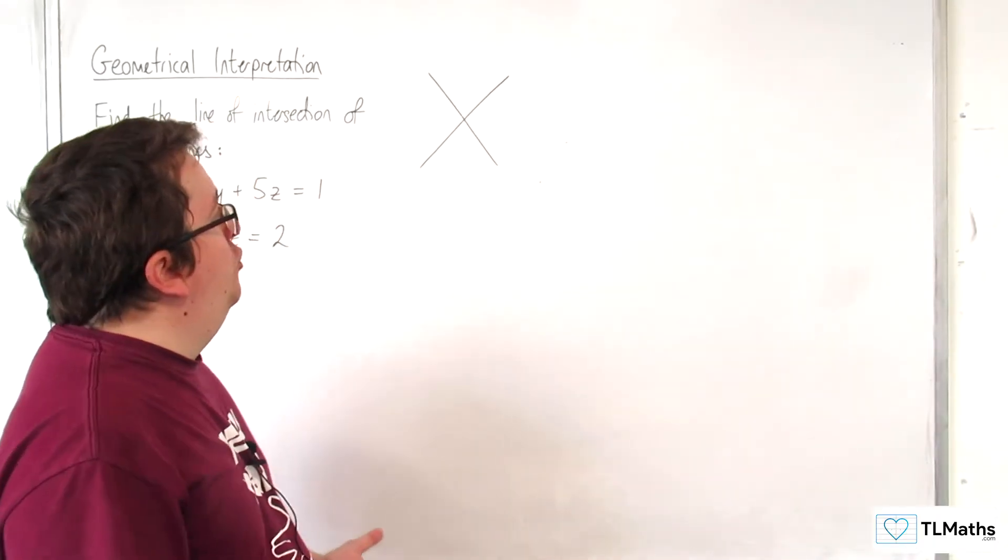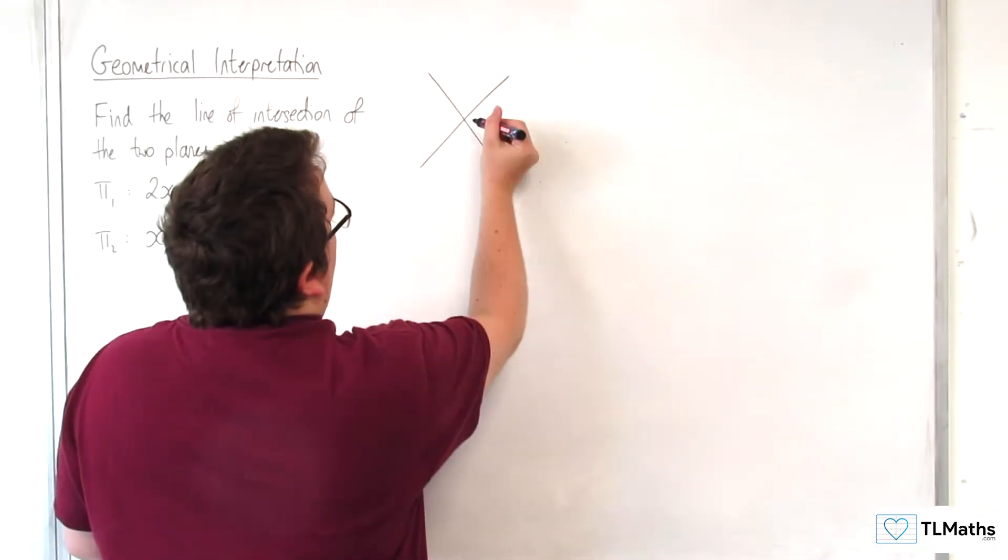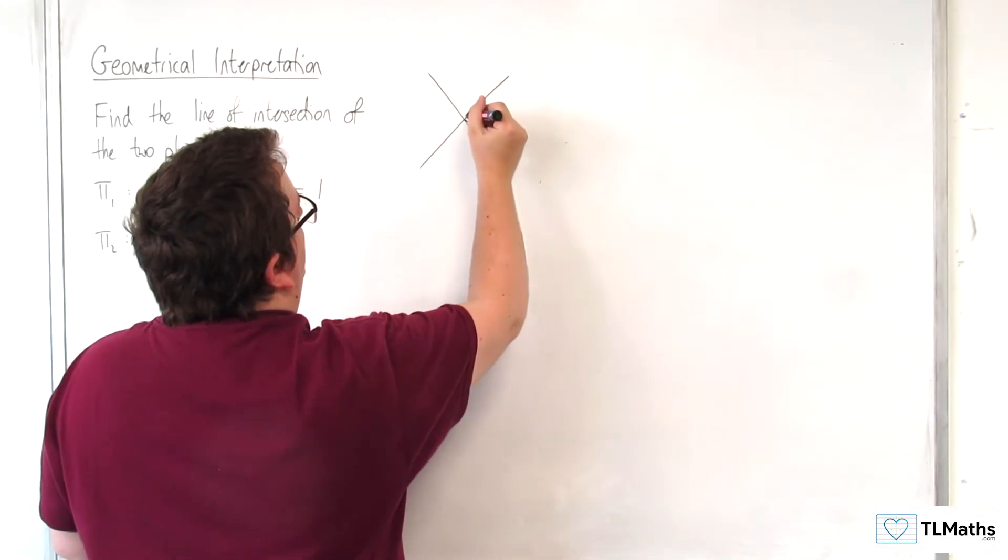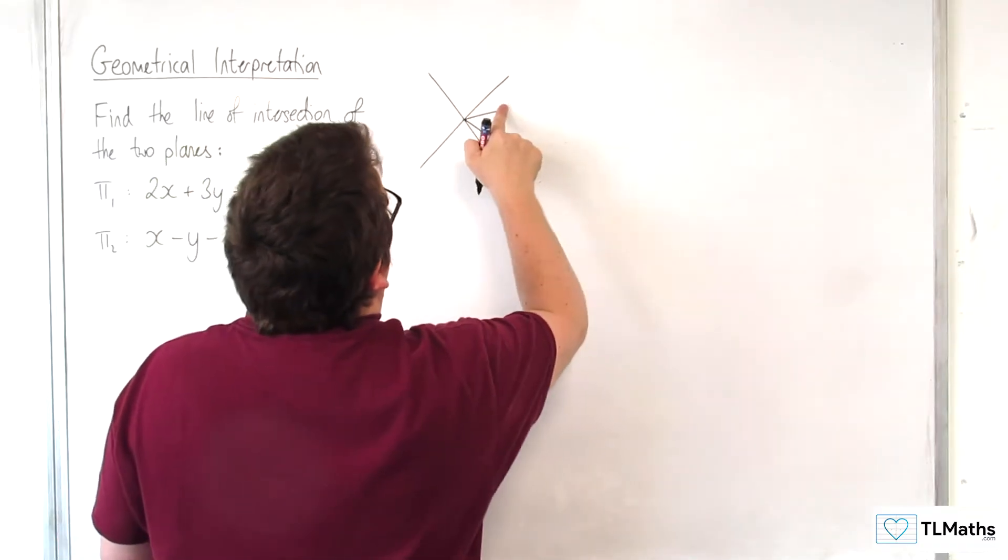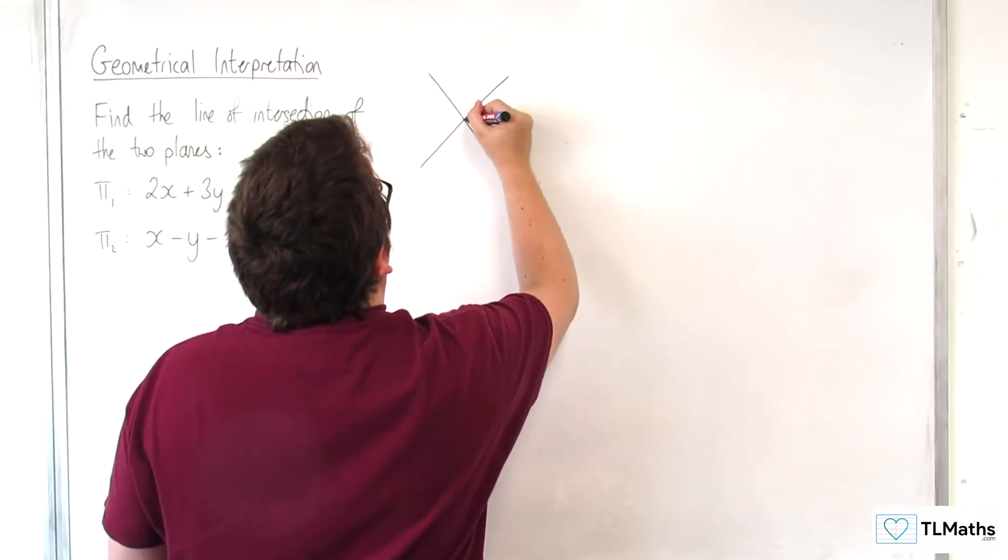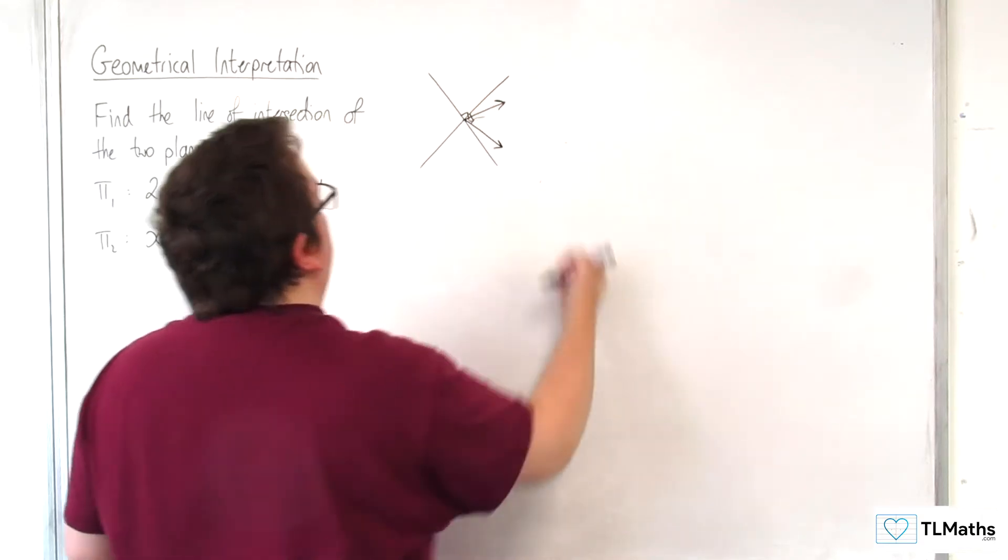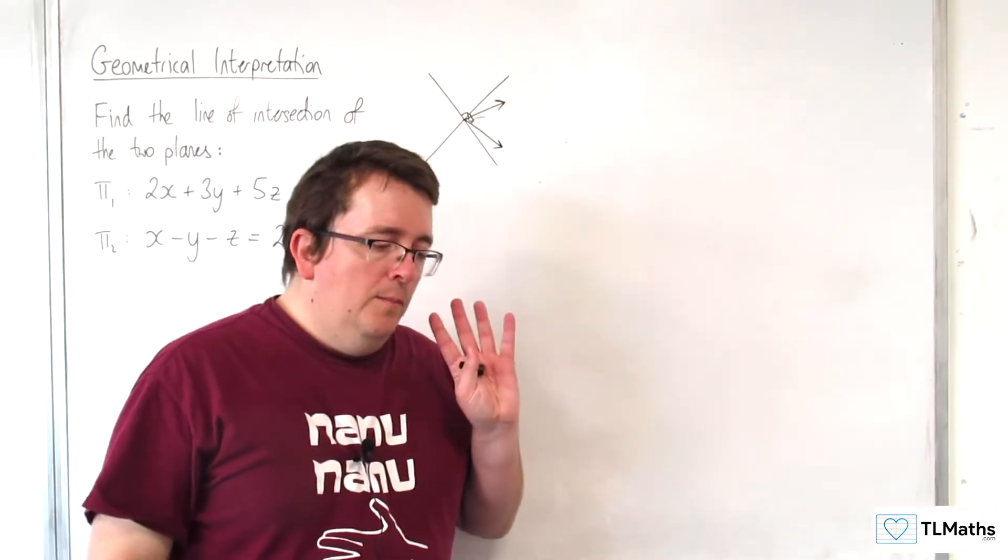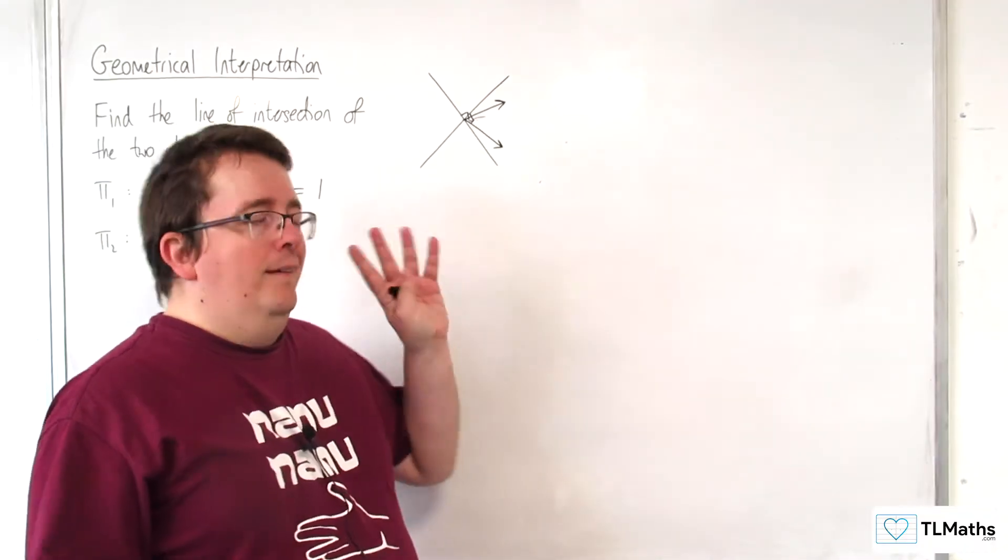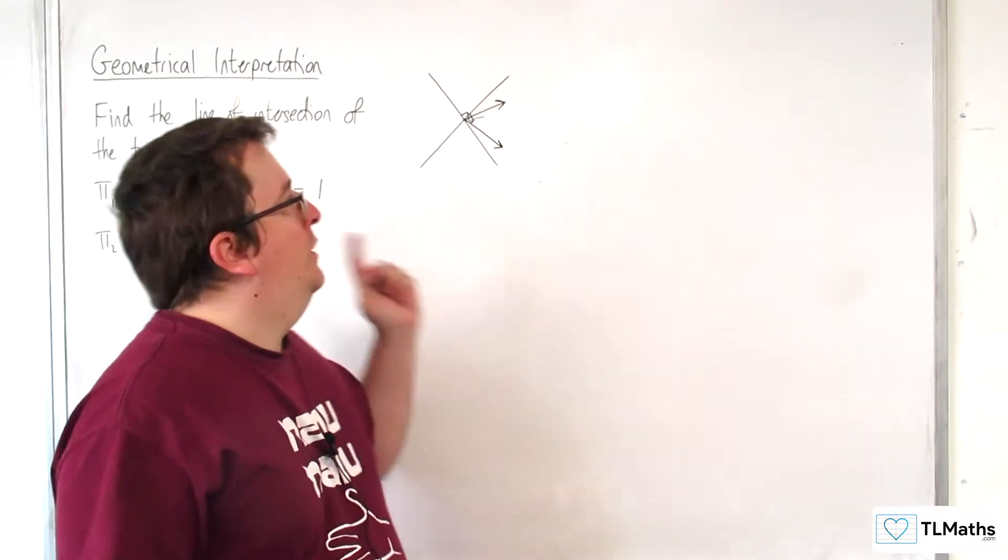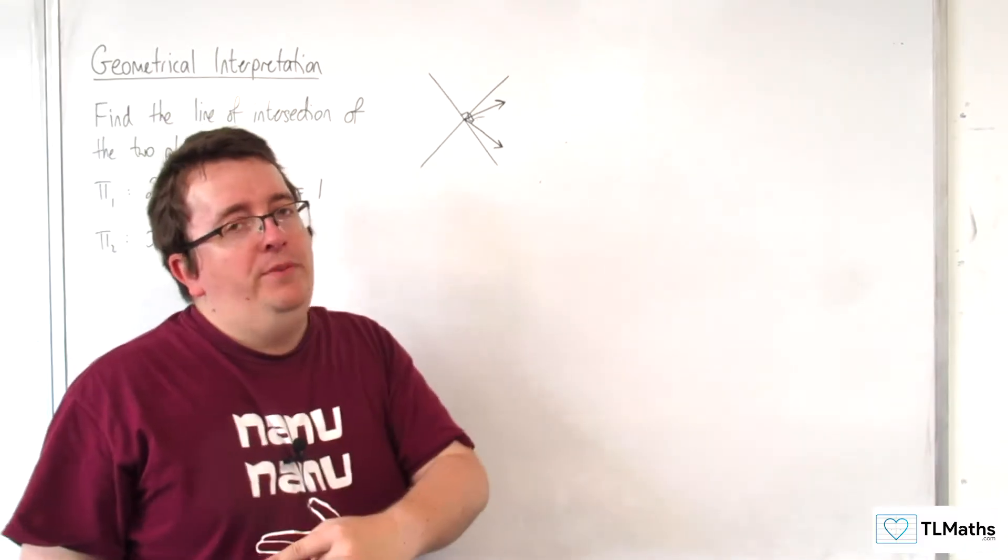Because the normal vectors of these planes, one's going that way, then one's going that way. Oh, that's a poor drawing. One's going that way. Making right angles there. But either way, the direction of the line is coming out of the board, and that's perpendicular to both of them.